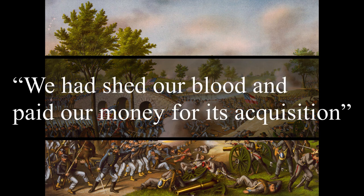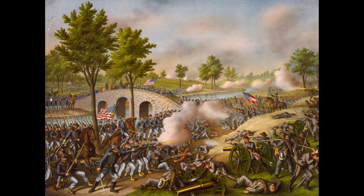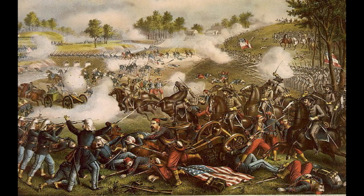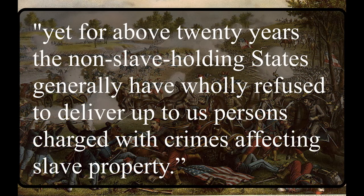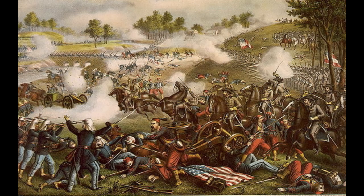Georgia's document also states: 'We had shed our blood and paid our money for its acquisition.' This referred to the Mexican-American War and the territories gained from it, and how the federal government had limited the ability of using slaves in those areas. It further states: 'Yet for above 20 years, the non-slaveholding states generally and wholly refused to deliver up to us persons charged with crimes affecting slave property.' This was part of what they referred to as depriving equal enjoyment of the Republic — northern states would not return runaway slaves, weakening the economic structure of the South.